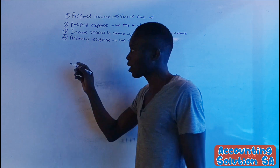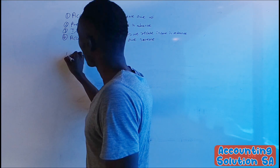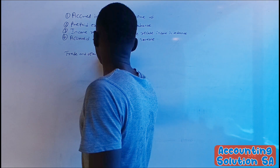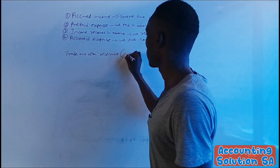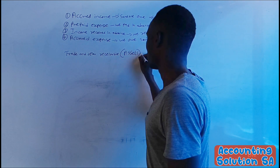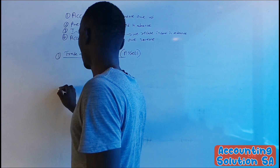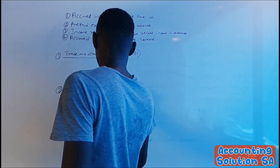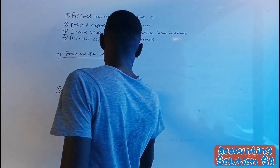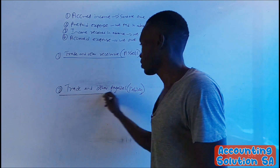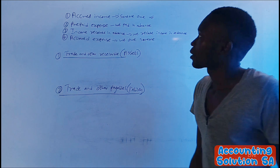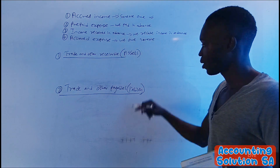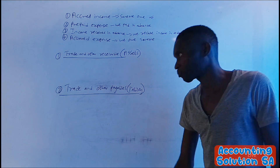We have an account called trade and other receivables, which is an asset account, and trade and other payables, which is a liability account. When we talk about assets, we control or own that item. For liabilities, we are owing to someone.